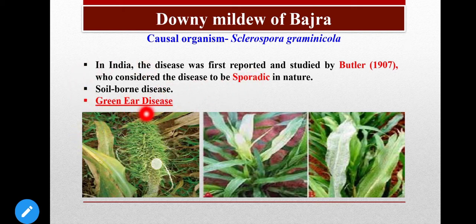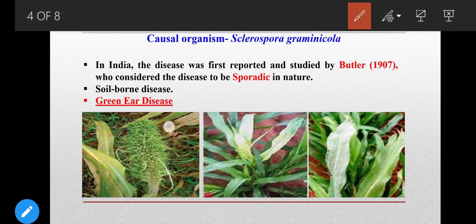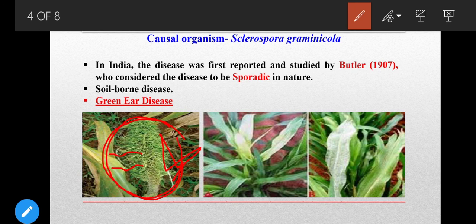This disease is also known as Green Ear Disease. It is called Green Ear Disease because the panicle or ear — the floral structure — has its florets converted into twisted leaf-like structures. As you can see here, the ear's floral parts are converted into twisted leaf-like structures, making the inflorescence look like a green structure. That is why it is called Green Ear Disease.